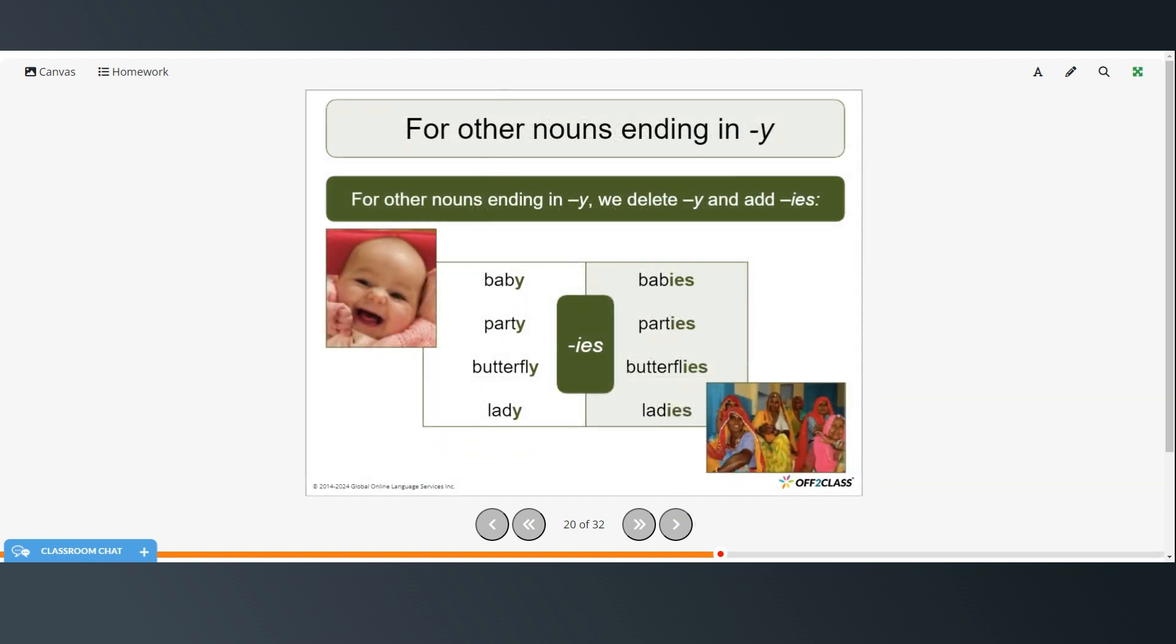So for other nouns ending in Y, we remove the Y and add I-E-S. So baby becomes babies, I-E-S. Party is parties. Butterfly, butterflies. And lady, ladies.